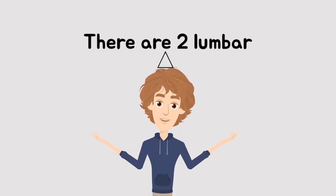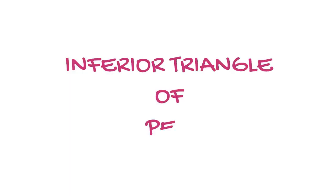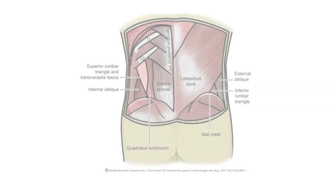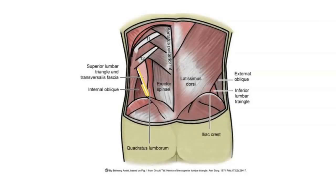We have two lumbar triangles in our body. Firstly, the inferior triangle of Petit, inferiorly bounded by the iliac crest, medially by latissimus dorsi, and laterally by external oblique. The next lumbar triangle is the superior triangle of Grynfeldt, laterally bounded by internal oblique, medially by paraspinal muscle, and superiorly by the lower border of the twelfth rib.